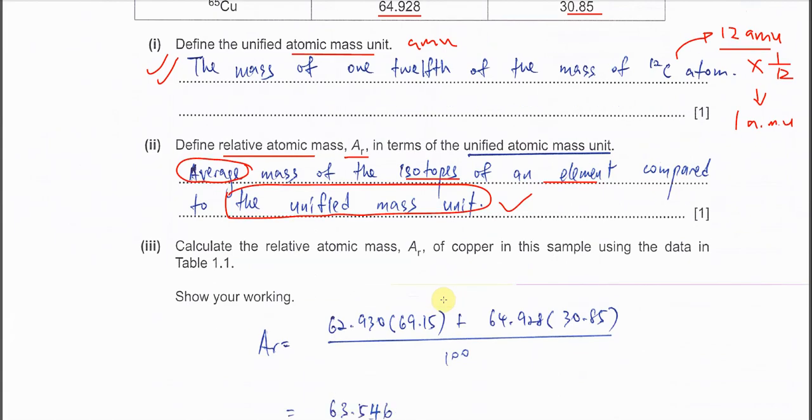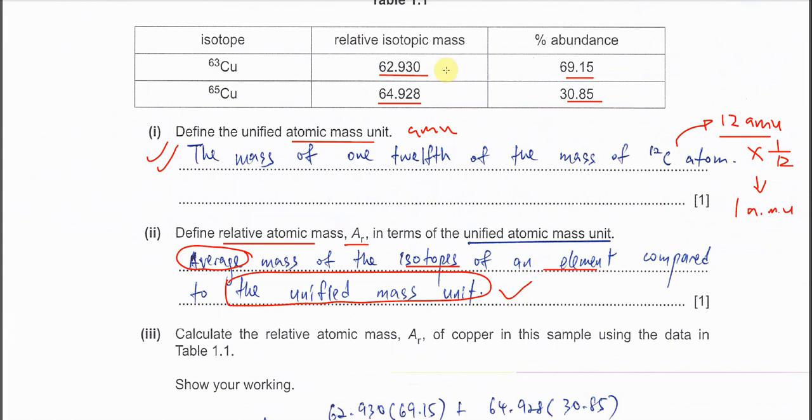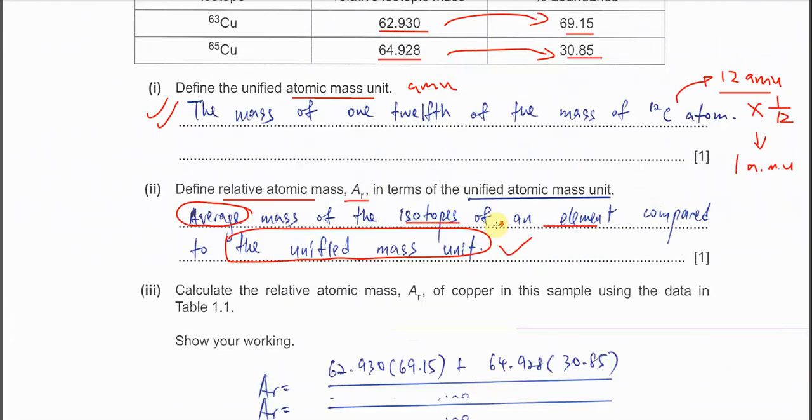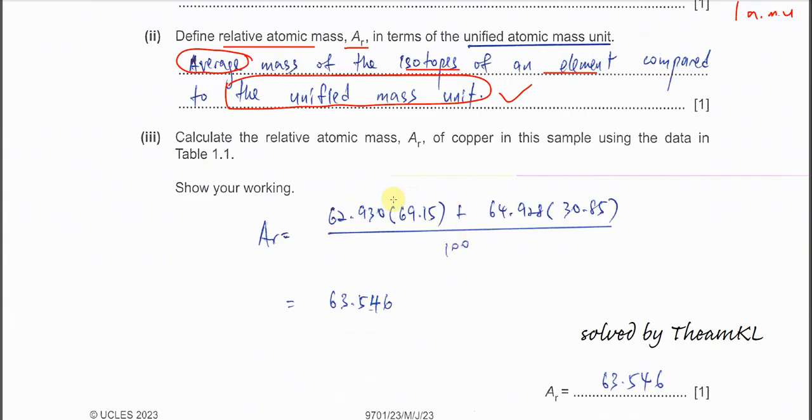Calculate the relative atomic mass of copper in the sample. So it's very easy. You just use the relative isotopic mass times the percentage plus the relative isotope mass of others times the percentage. Sum it up, so over the total relative abundance in this question is 100, so you get 63.546. It's better for you to leave it as three decimal places because the question is given three decimal places.